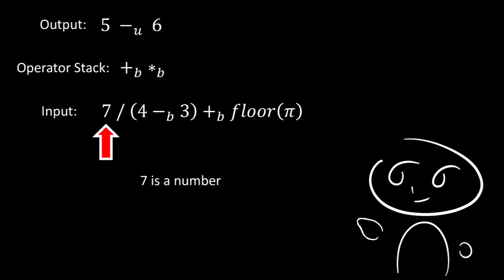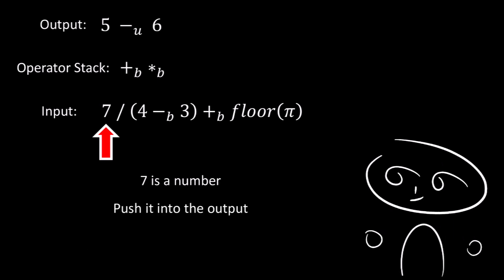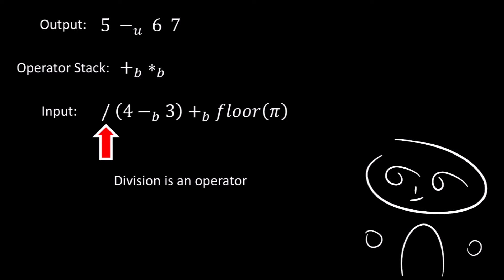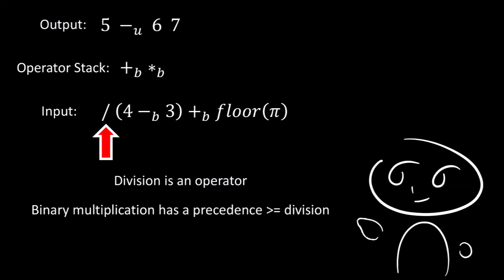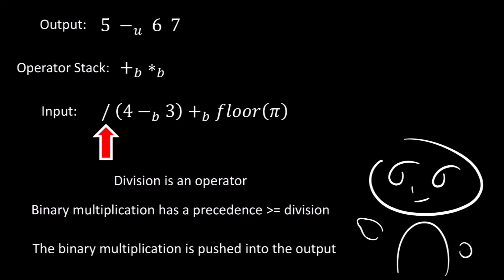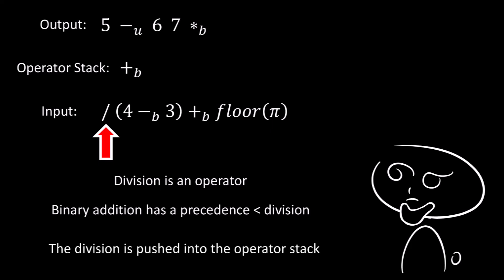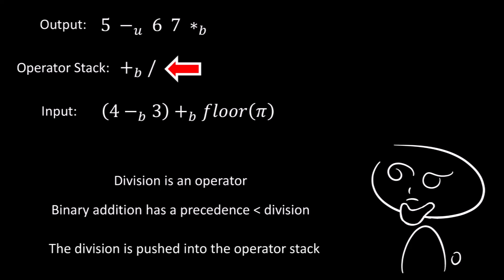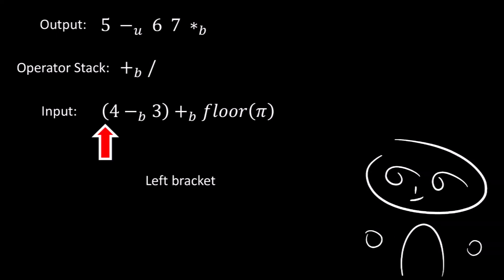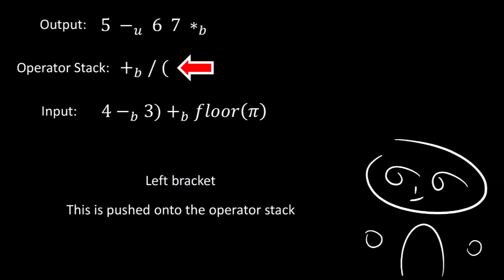Next, we find a 7, which simply gets pushed into the output. Then we find division, which is an operator. Binary multiplication has a precedence greater than or equal to division — in this case, equal — so the binary multiplication is pushed into the output. Since binary addition has a precedence less than division, the binary addition is left in place, and the division is pushed into the operator stack. Then we find a left bracket, which is pushed onto the operator stack.